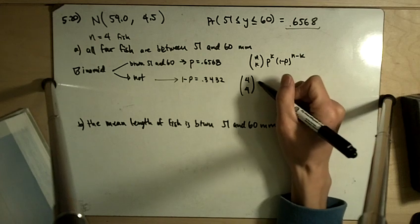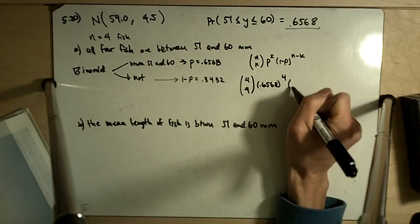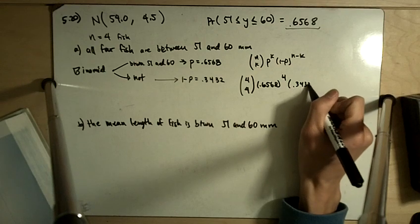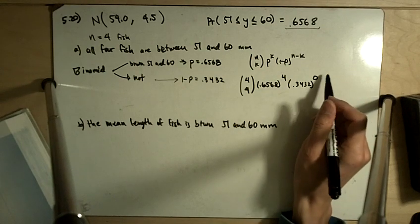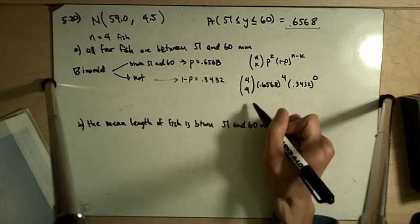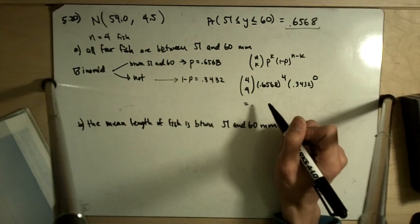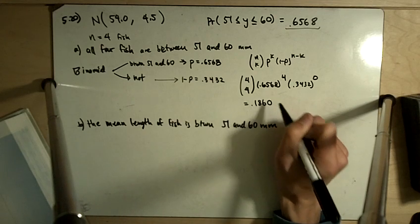P is 0.6568 to the 4 times 1 minus P. It doesn't really matter because it's going to be to the 0, 4 minus 4, or 0. So this cancels out to 1. 4 choose 4 is actually 1. And so we get 0.6568 to the 4th, which equals 0.1860.